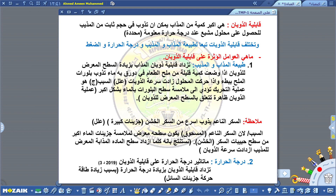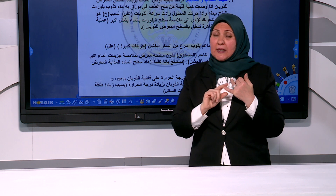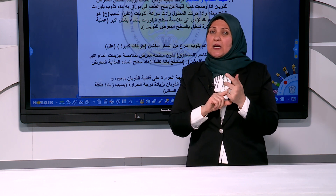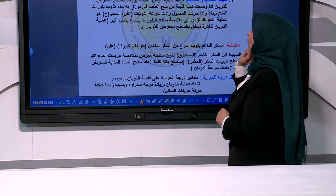قابلية الذوبان تختلف تبعاً لطبيعة المذاب والمذيب ودرجة الحرارة والضغط. العوامل التي تؤثر على قابلية الذوبان ثلاثة: أولاً طبيعة المذاب والمذيب، وهي الخاصية الفيزيائية. ثانياً درجة الحرارة بارتفاعها وانخفاضها. وثالثاً الضغط وتأثيره على الذوبان.